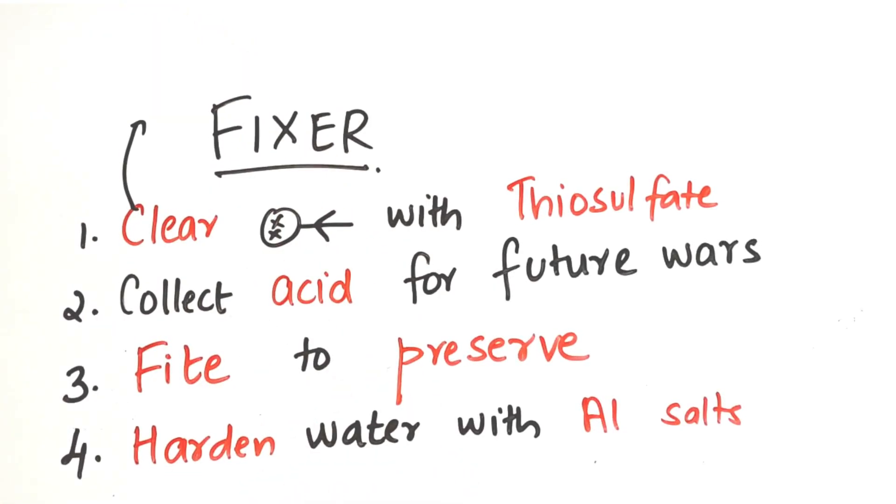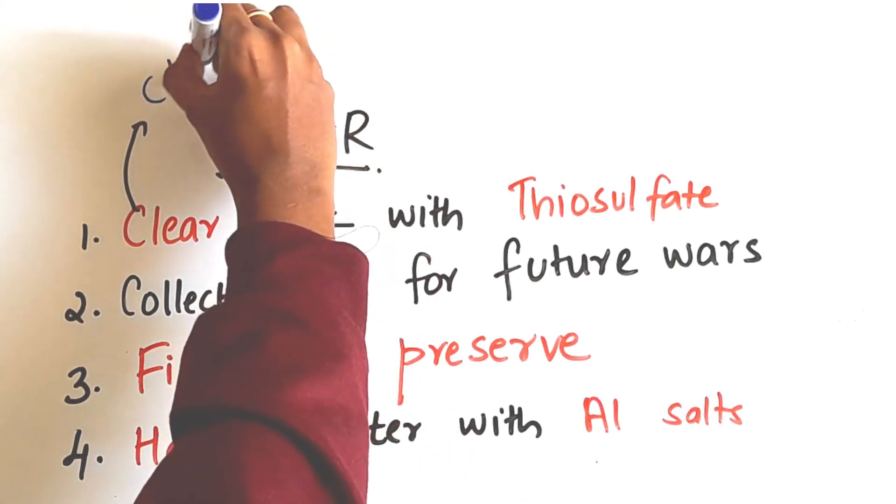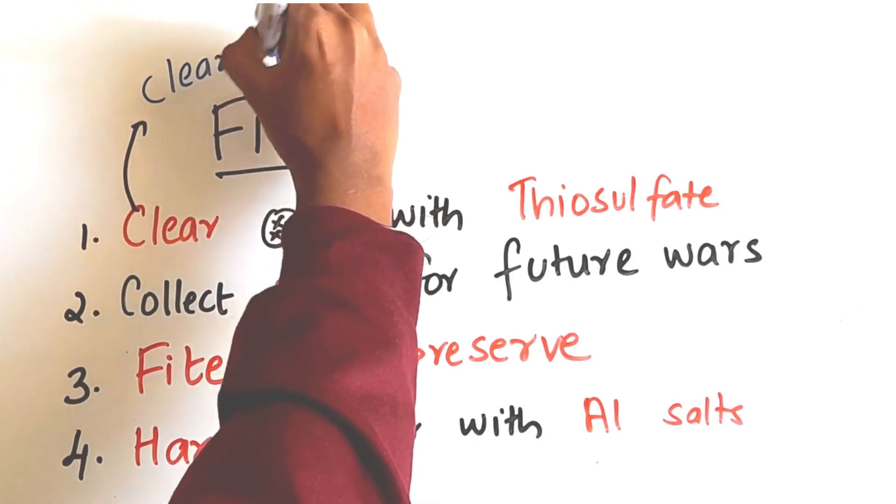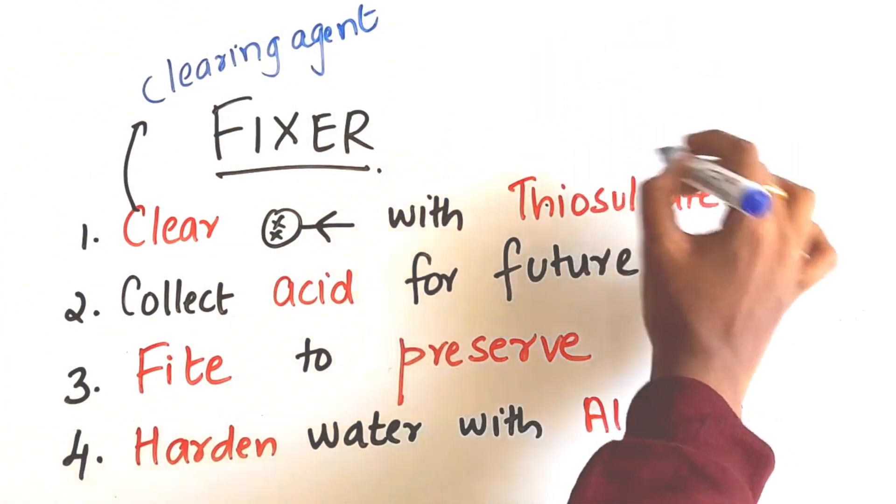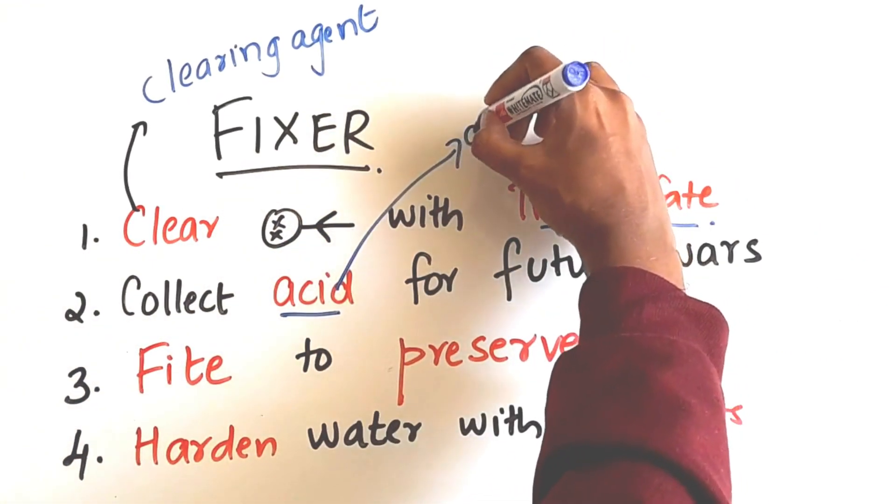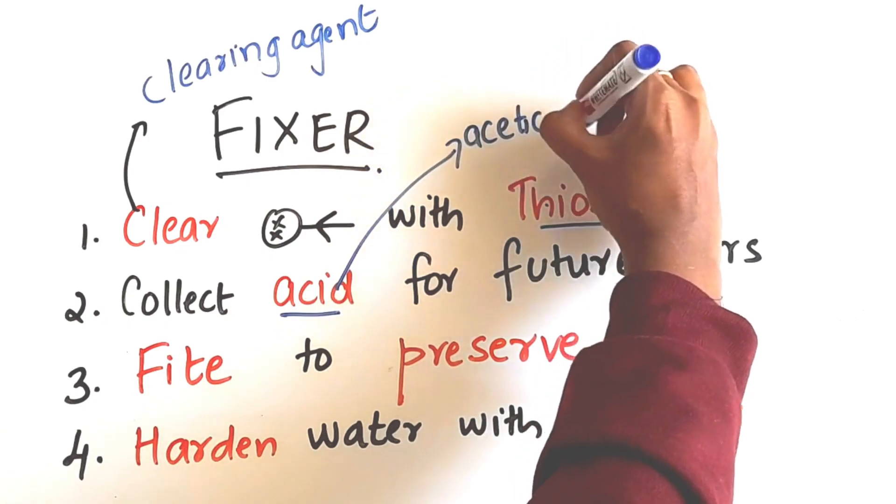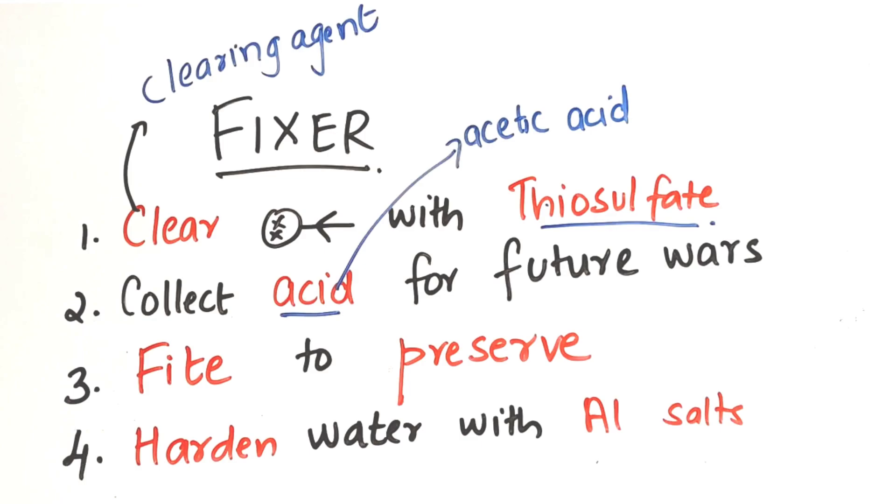First, we clear the dead bodies with thiosulfate. Clear will help you remember that thiosulfate was the clearing agent used to make the dead bodies turn into dust. Second, we collected this enemy's acid, the acid gunshots - that was acetic acid. We collected it to use for future wars.